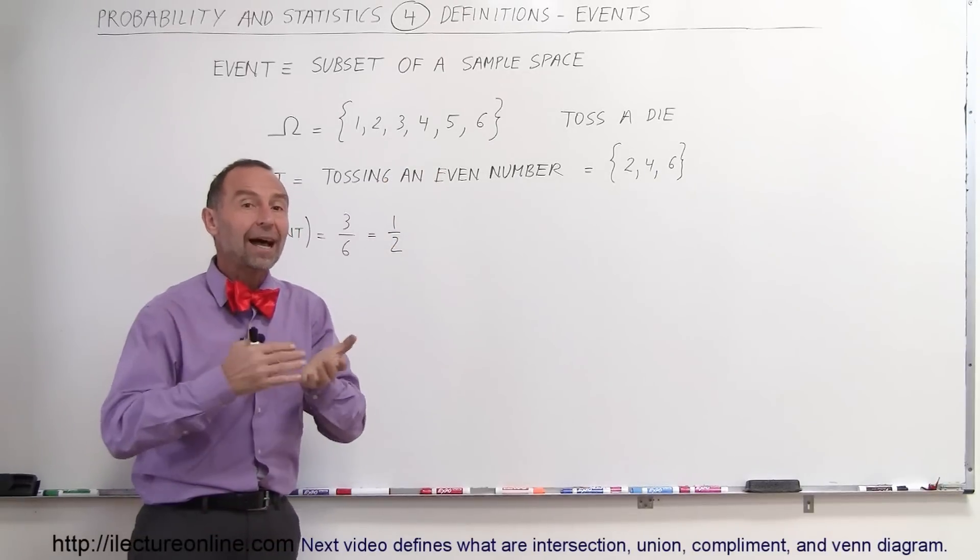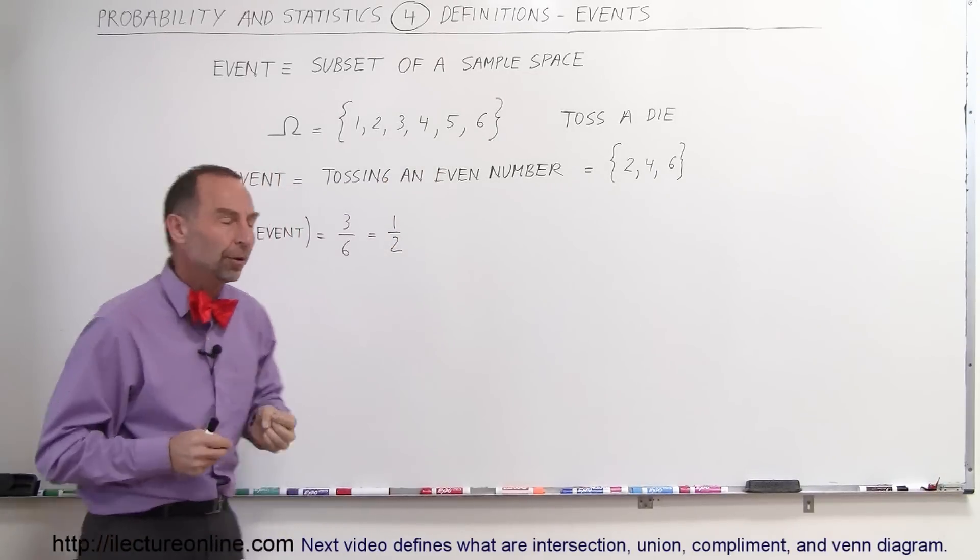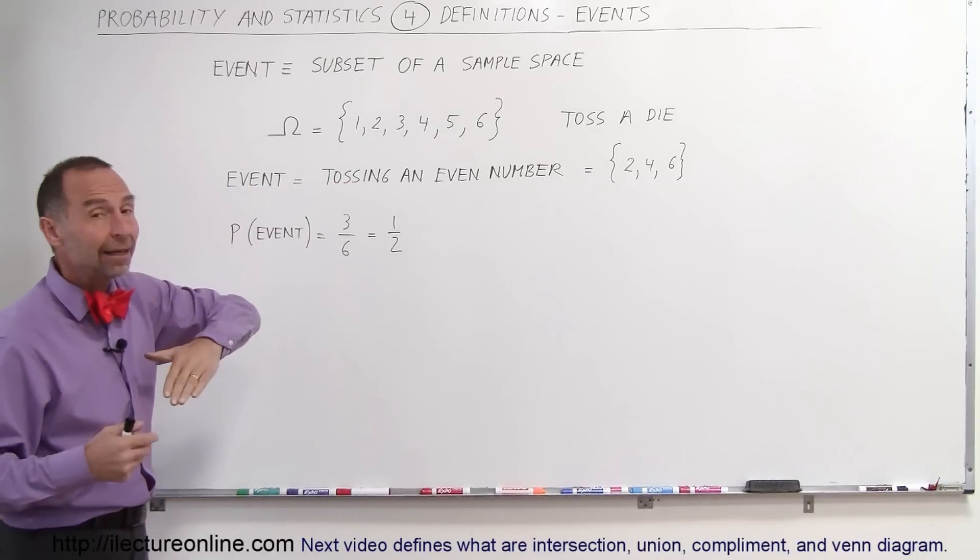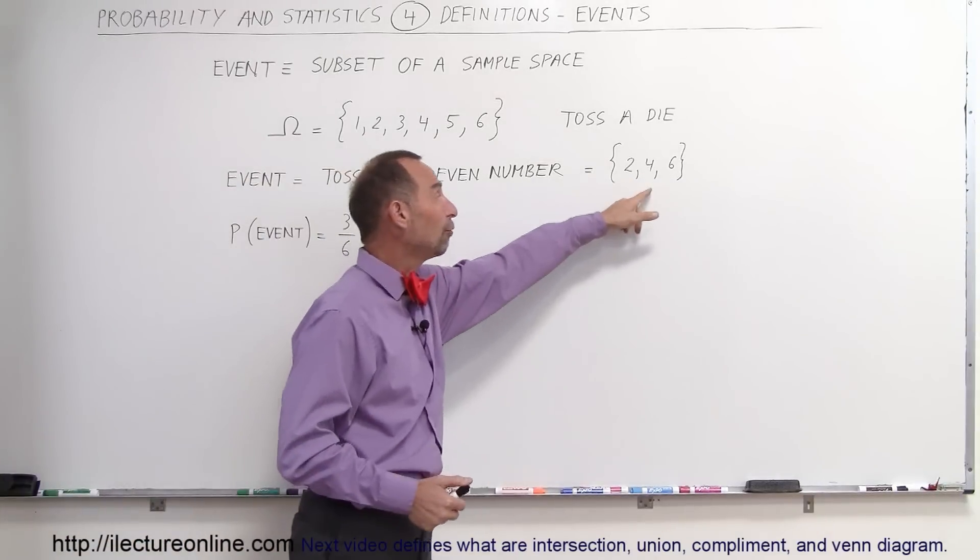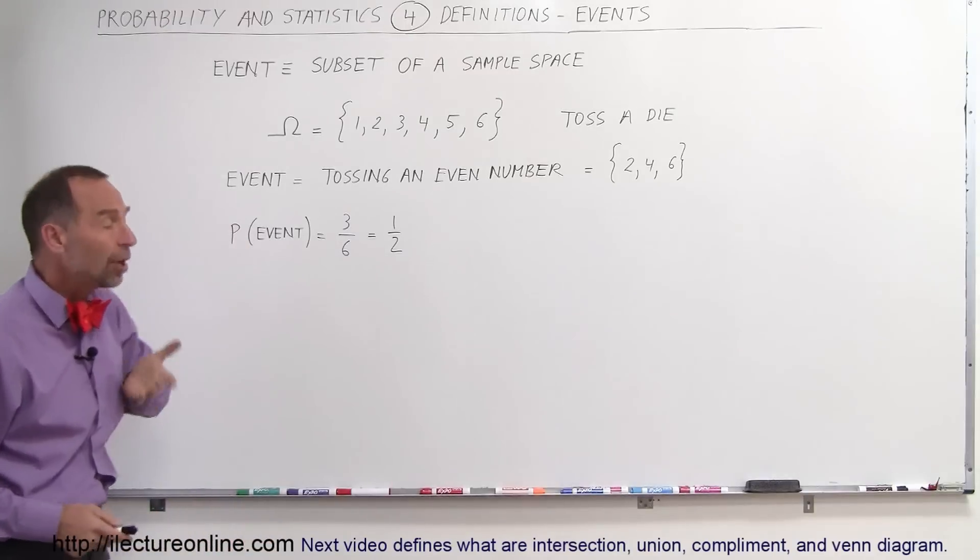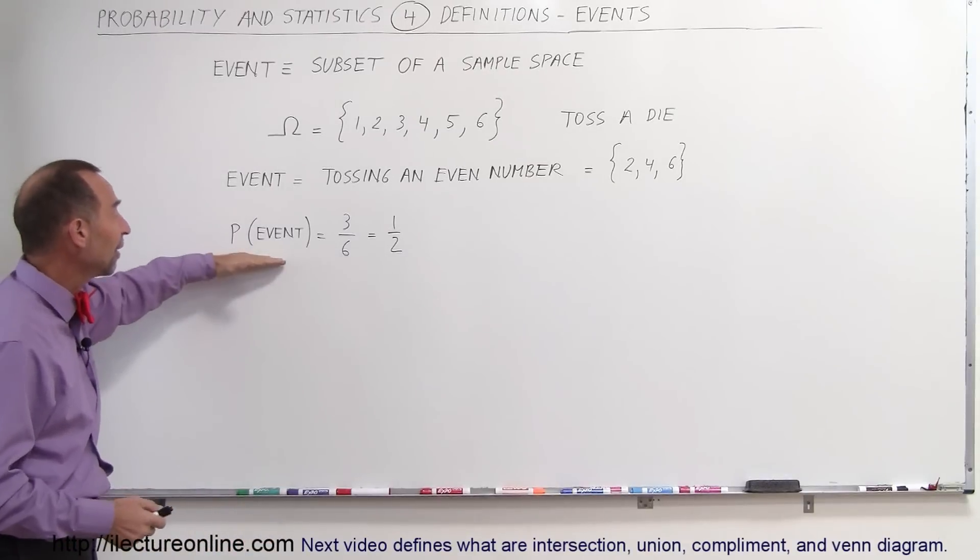An event could be tossing a die and looking for an even number. So the event would be tossing an even number with a die, and that could be either a 2, a 4, or a 6. So this would be the event. The event would be tossing an even number. And what is the probability of that event?